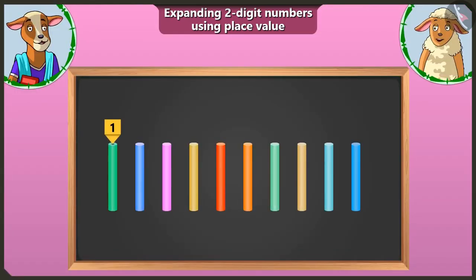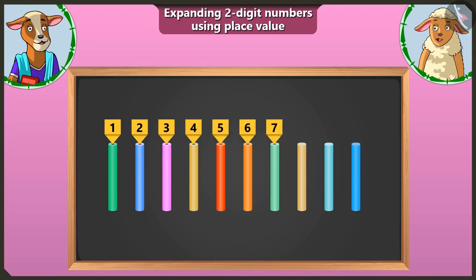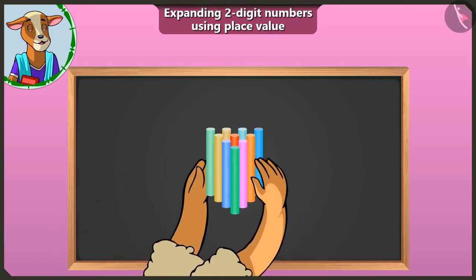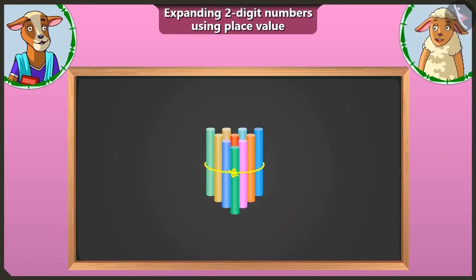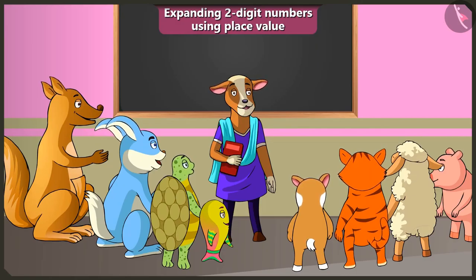I will tie these one, two, three, four, five, six, seven, eight, nine and ten chocks like this here. It has become a bundle of ten. Well done, Lily.